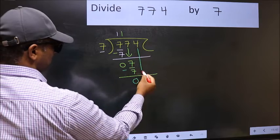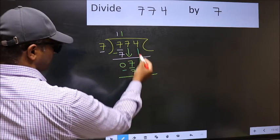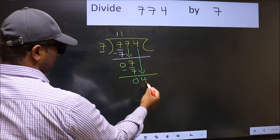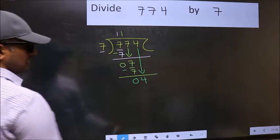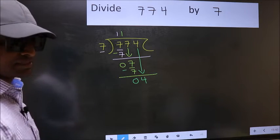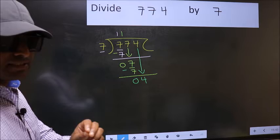After this, bring down the beside number. So 4 down. After this step, the mistake happens. And the mistake is this.